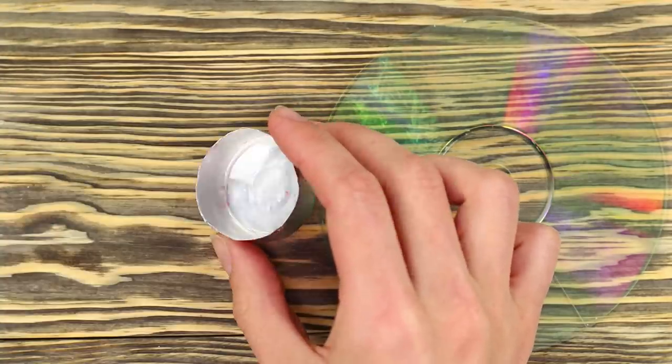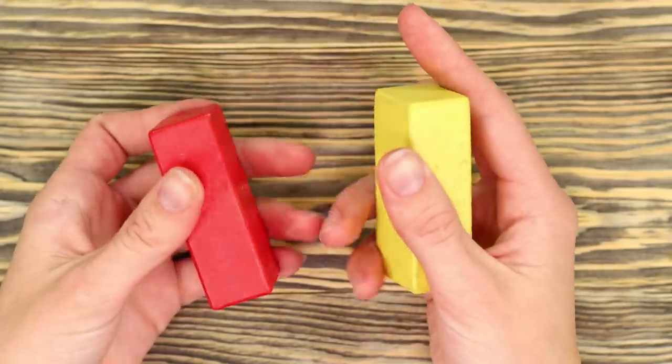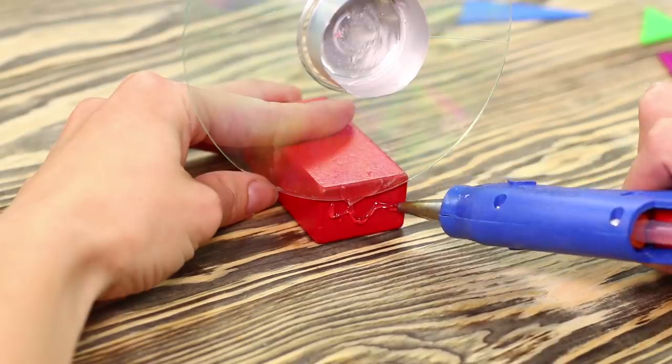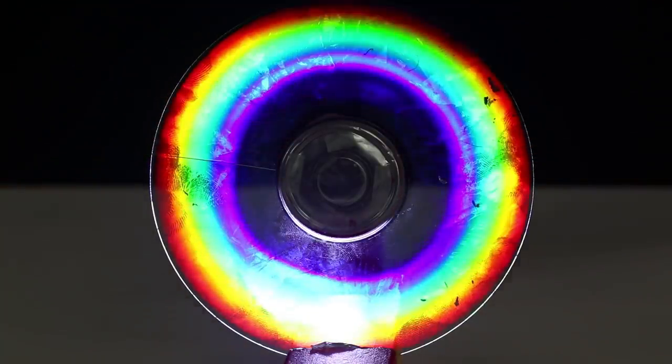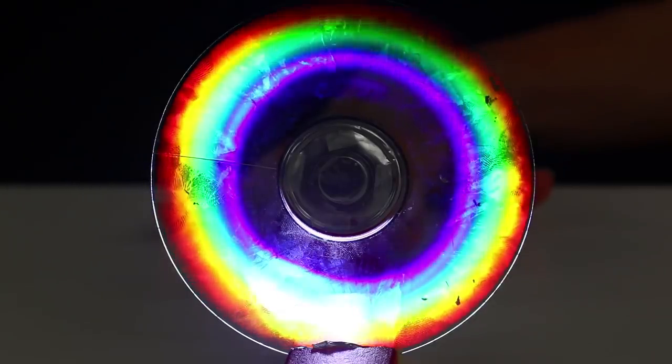Attach a small metal candlestick to the center of the disc. Now you need two wooden cubes. Make a support from them and install the disc like this. Turn off the light in the room. Direct a flashlight on the disc and admire the bright rainbow colors. Very beautiful!